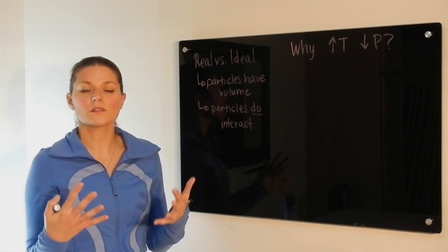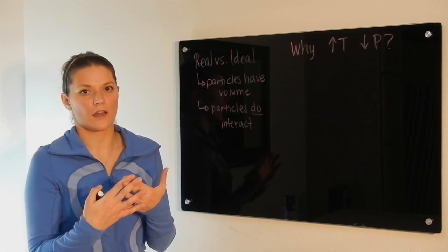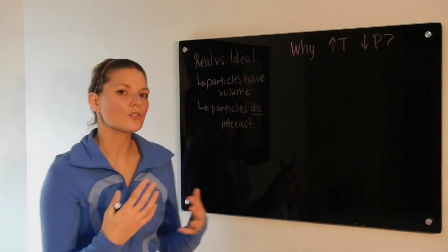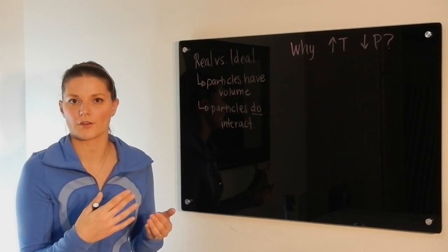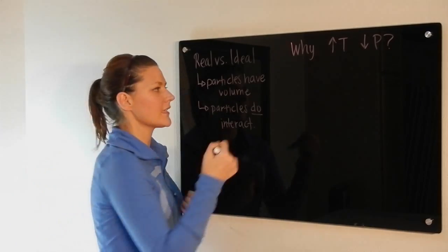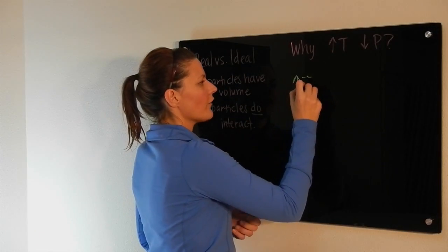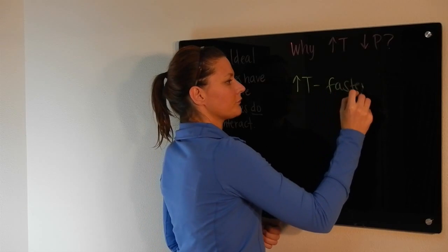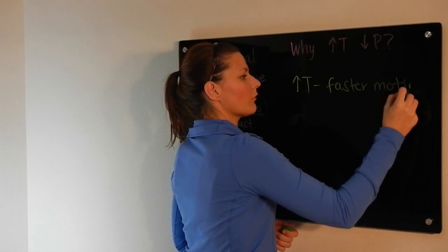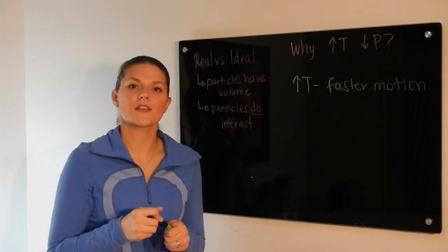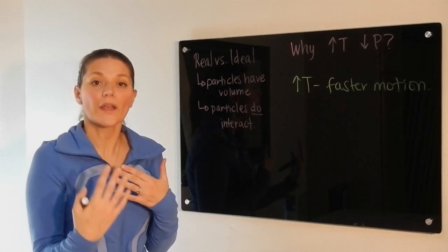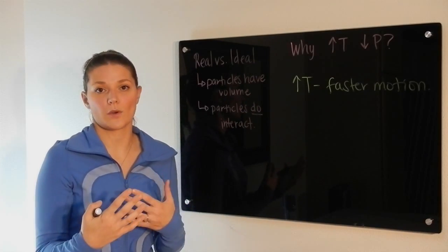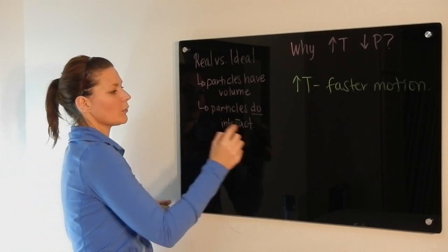If you have polar molecules, they would be very much more attracted to one another. So these conditions have to counter the issues in one way or another. When you have high temperature, you're going to have faster motion. If you consider that these particles are now moving very quickly, there's not going to be much opportunity for them to interact with one another, which then helps us deal with this issue.